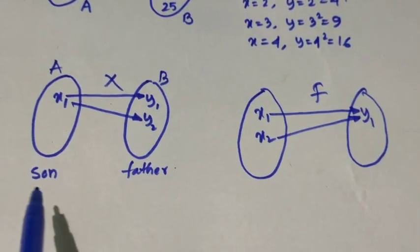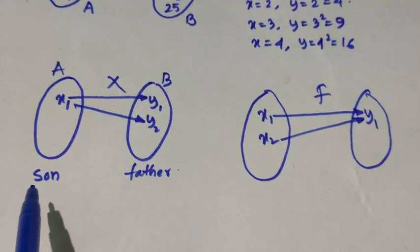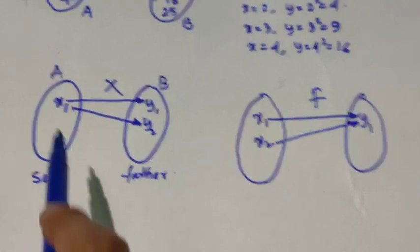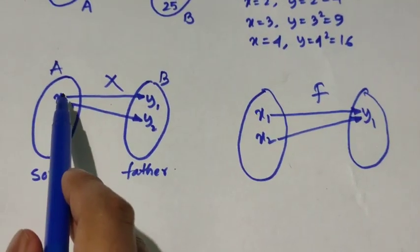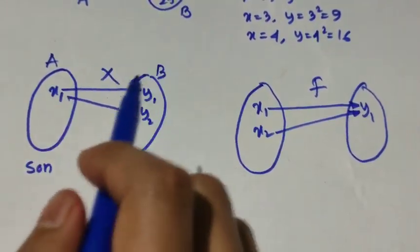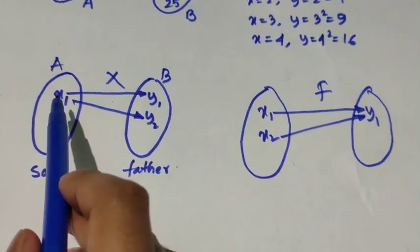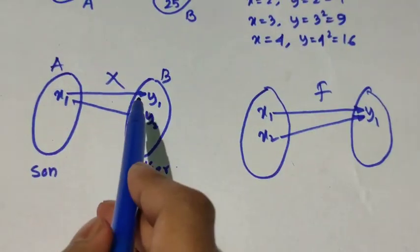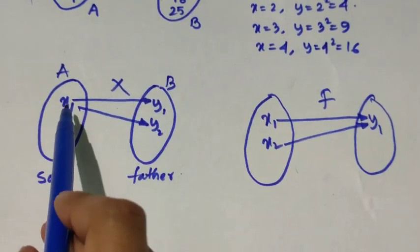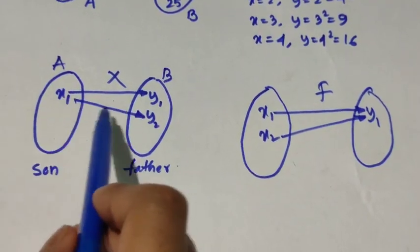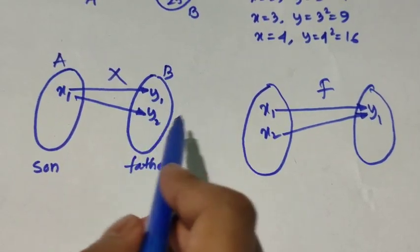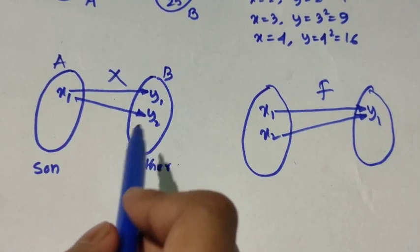To remember this, let us consider the first set as a set of sons and the second set as the set of fathers. Let x1 be a son — x1 may have only one father, y1. But in this mapping we can see that x1 has two fathers, which is biologically not possible, so this is not a function.